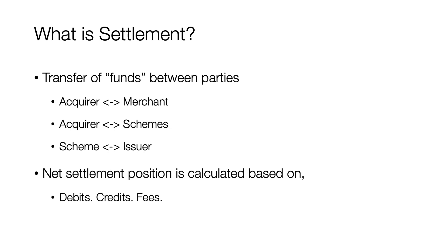Now let's look briefly at settlement. Settlement is where the actual transfer of funds happens between various parties — acquirer to merchant, acquirer to schemes, and schemes to issuer. Acquirers compute the net settlement amount with the merchants based on various fees like interchange and commissions, and then settle with the merchant. Schemes compute the net settlement position based on debits, credits, fees, and other charges. During onboarding with the schemes, issuers and acquirers set up Nostro and Vostro accounts where they exchange funds between each party. Clearing is a very important step as it helps calculate the final net settlement amount to be exchanged between these parties.